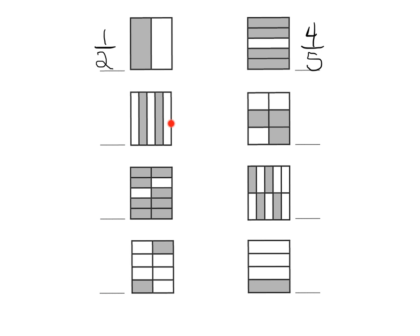And then right here, we've got one, two, three, four, five pieces, and four-fifths are shaded in. Right here we've got six pieces and three of them are shaded in, so that would be three-sixths.